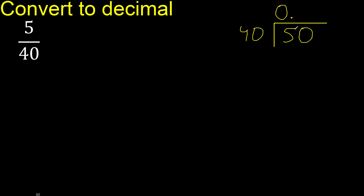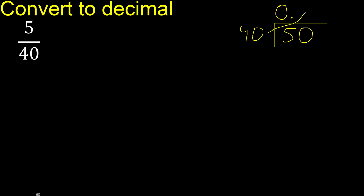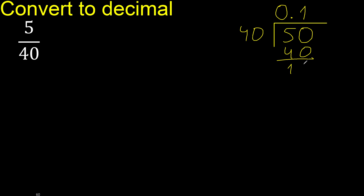0.50 is not less than 40, therefore with 50: 40 multiplied by what number is nearest to 50? Multiplied by 2 is 80 — excessive. Therefore multiplied by 1 is 40. 40 is the nearest number. Subtract, the remainder is 10.